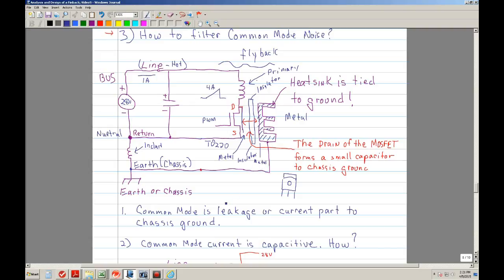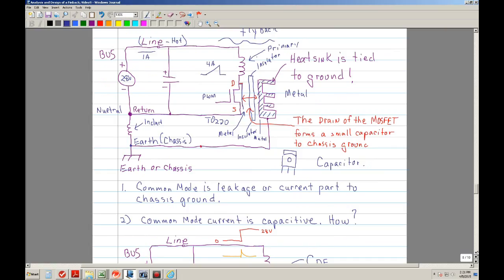So metal, insulator metal. Does that ring any bell? Actually forms a capacitor. So basically, what you do when you ground your MOSFET to the ground of the heat sink, you form a small capacitor.